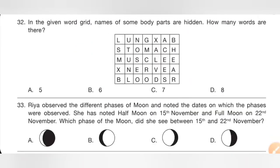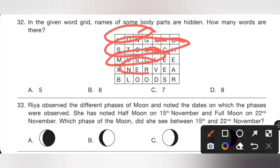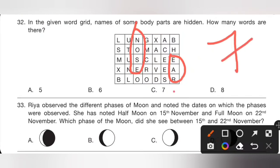Question 32: In the given word grid, names of some body parts are hidden. How many words are there? Options: 5, 6, 7, or 8. The body parts found are: lungs, stomach, muscle, nerve, blood — that's 5 horizontal. Then nose and one more, making a total of 7 body parts hidden in the given word grid. Option C, 7, is the correct answer.